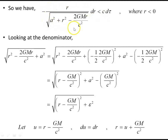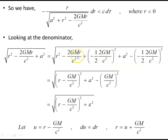We have minus r over the square root of a² + r² − 2GMr/c² times dr/dτ less than c. Now the reason for simplifying is that this fractional expression is in a form we can integrate. Looking at the denominator under the radical sign, we'll complete the square on it to produce something simpler, which then allows us to consult integral tables. The square root of a² + r² − 2GMr/c² can be completed to give (r − GM/c²)² + a² − (GM/c²)².